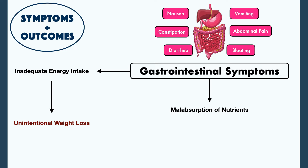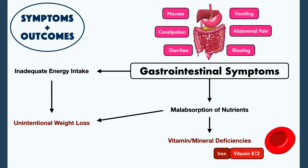It can also lead to the chronic malabsorption of nutrients. So, even if a patient with celiac disease is able to eat enough, they may still experience unintentional weight loss and they can develop vitamin and mineral deficiencies. For example, patients with celiac disease are at an increased risk of developing anemia from the malabsorption of iron or vitamin B12, and bone disease from the malabsorption of calcium or vitamin D.